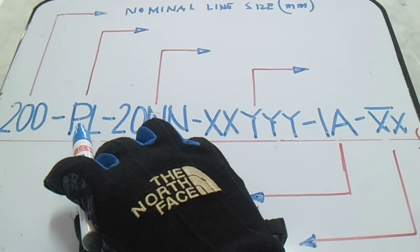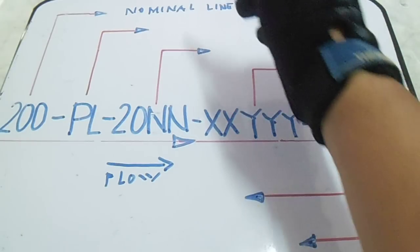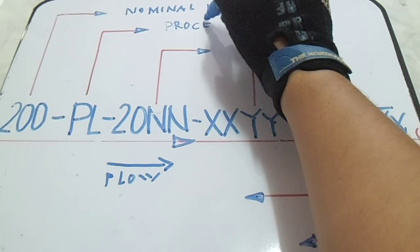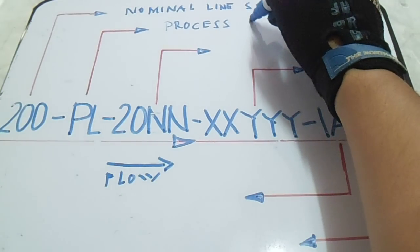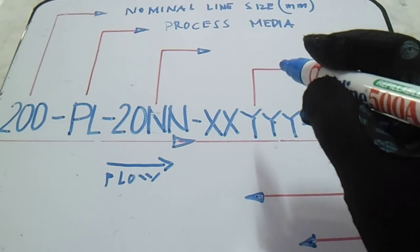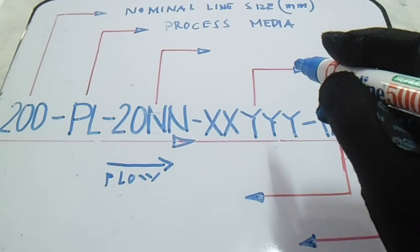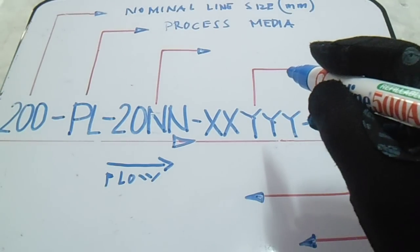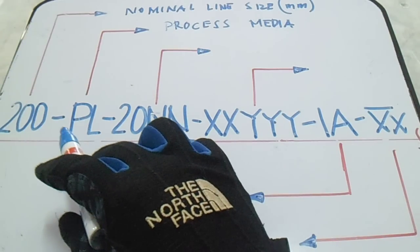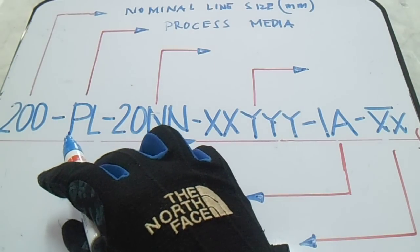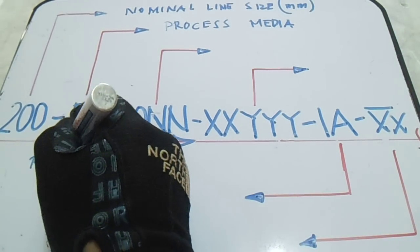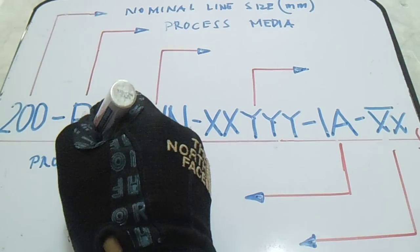Next is PL. The meaning of PL — this is a process line, or a process media. This is a process media, and PL also means process liquid. So this is a process liquid.